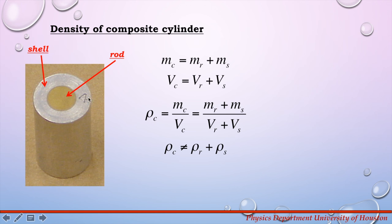The total mass of this composite cylinder is given by the mass of the rod, the inside part, plus the mass of the outside part, the shell. The total volume of the composite cylinder is the volume of the rod plus the volume of the shell.